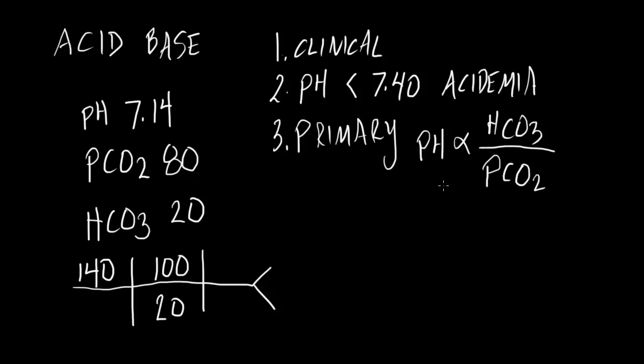If we have a low pH, we must have a low bicarb or a high pCO2. In this particular case, we have all of those. We have a low pH, we have a low bicarb, and we have a high pCO2. So we can pick and choose what our primary is.